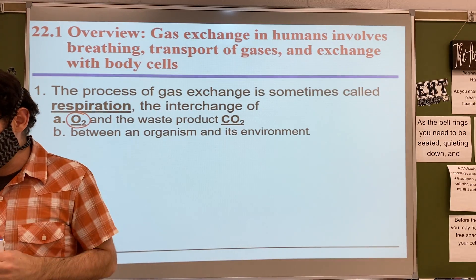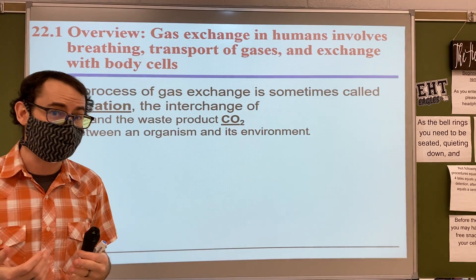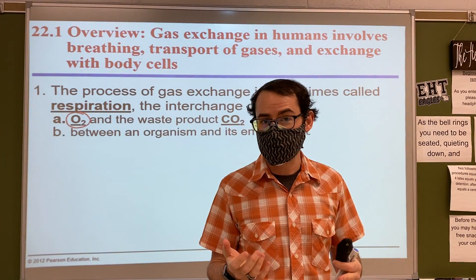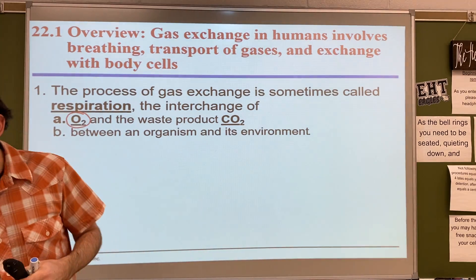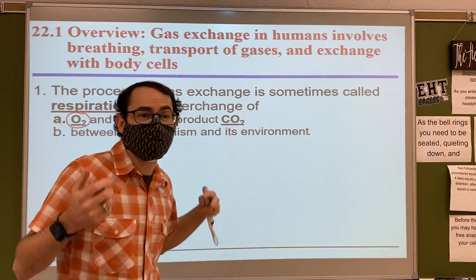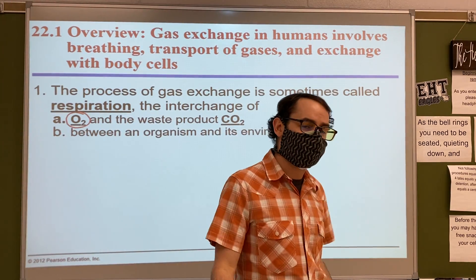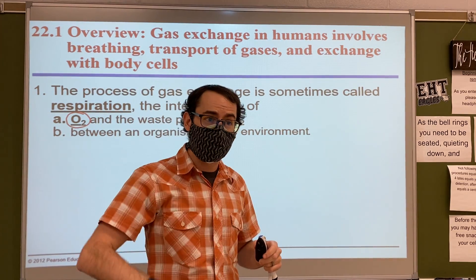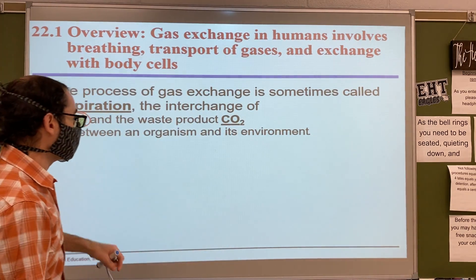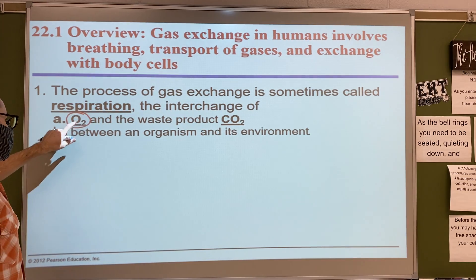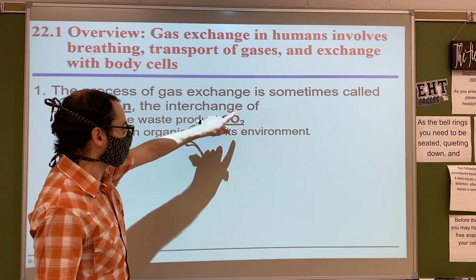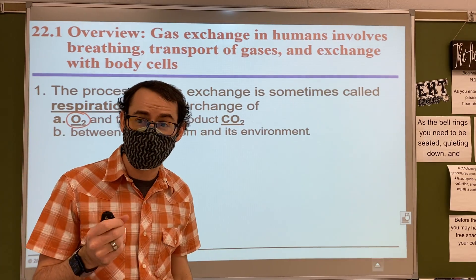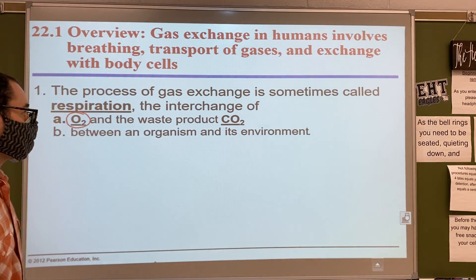The reason we need oxygen is for cellular respiration, which happens in mitochondria. Mitochondria are found in your cells, and your cells are everywhere. That's why we need this big system - we need a way to get oxygen everywhere efficiently. We get oxygen in, and we also need to get carbon dioxide out, because carbon dioxide in too high a concentration is acidic and can cause issues with your body.